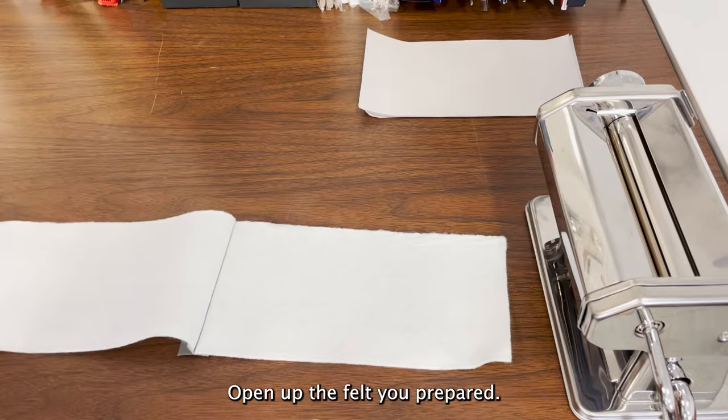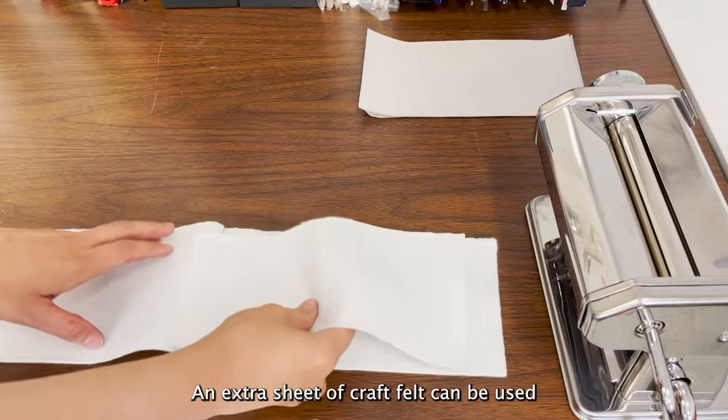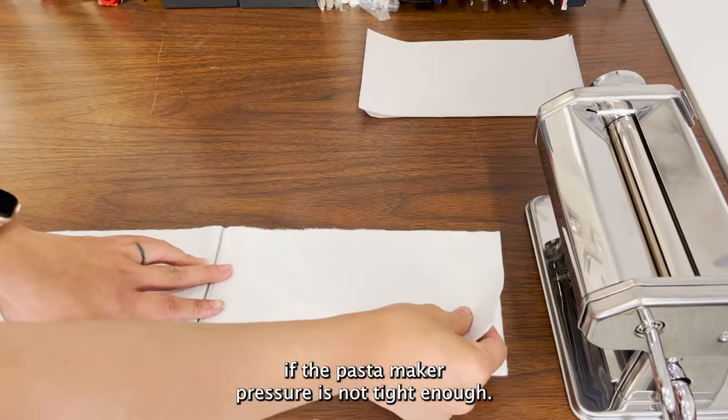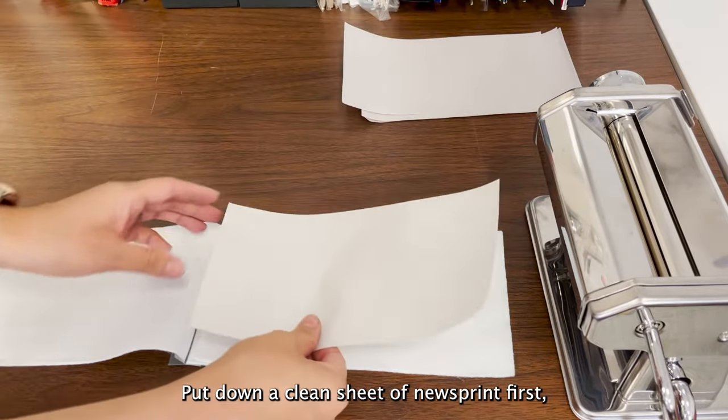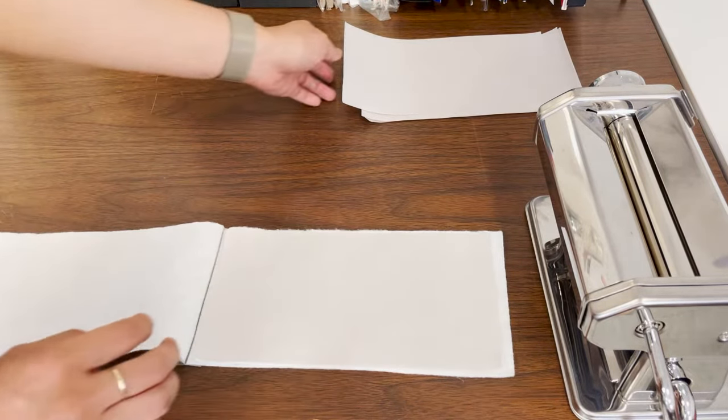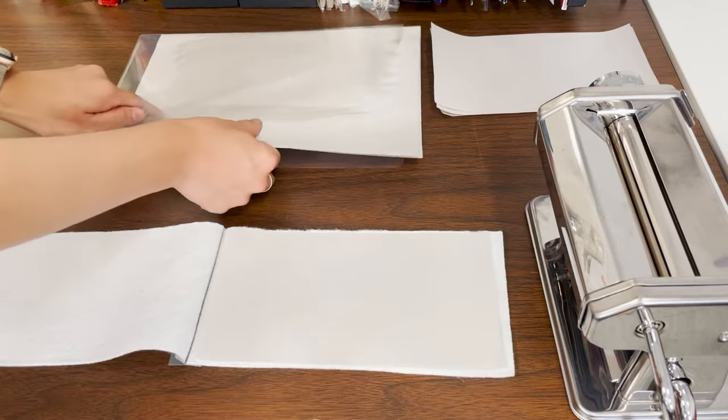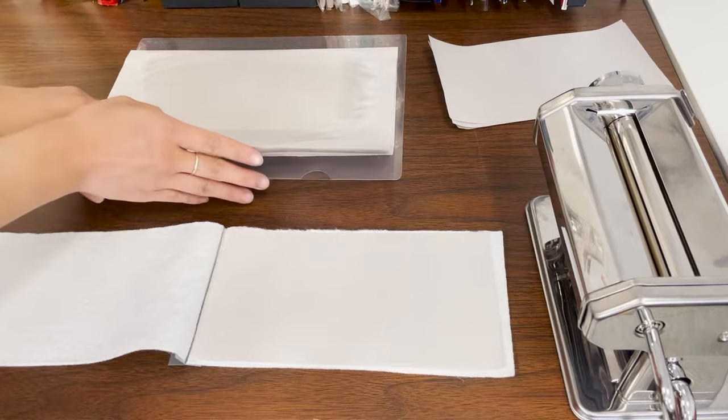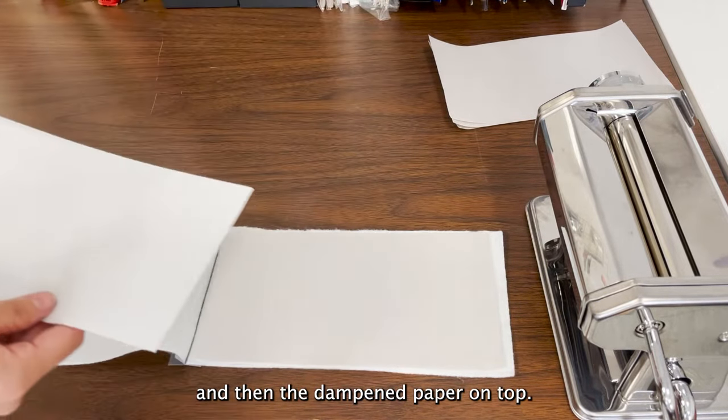Open up the felt you prepared. An extra sheet of craft felt can be used if the pasta maker pressure is not tight enough. Put down a clean sheet of newsprint first, and then the dampened paper on top.